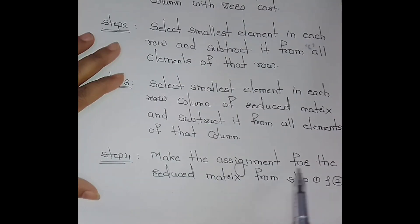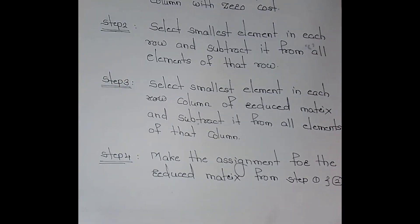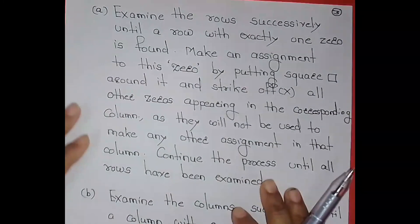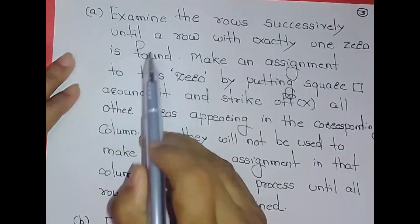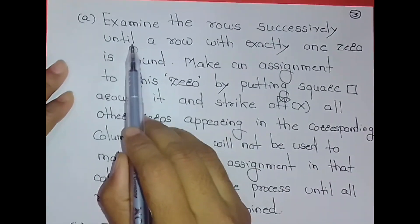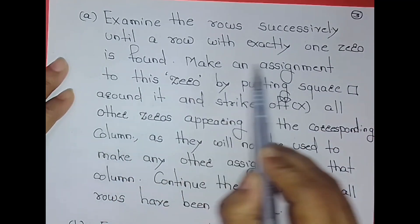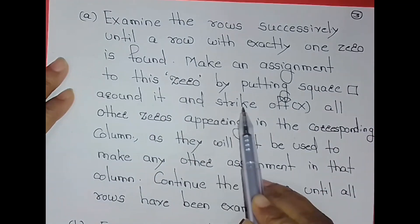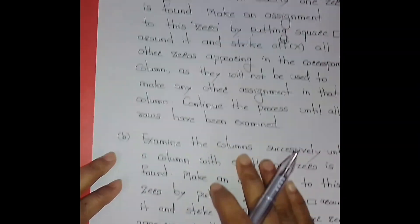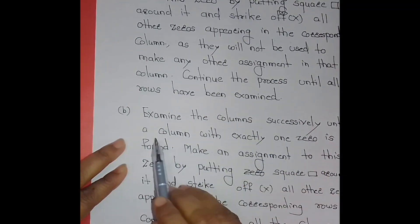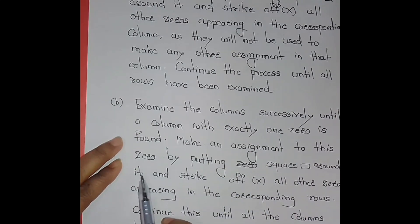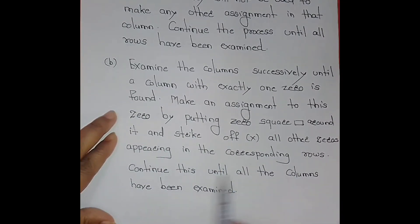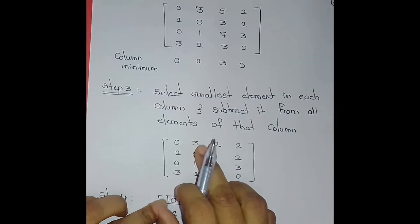Step 4: make assignments for the reduced matrix. This involves row scanning and column scanning. For row scanning: examine rows successively until a row with exactly one zero is found, make an assignment to that zero by putting a square around it, and strike off all other zeros appearing in the corresponding column. For column scanning: examine columns successively until a column with exactly one zero is found, make an assignment to that zero, and strike off all other zeros in the corresponding row. Continue until all rows and columns have been examined.